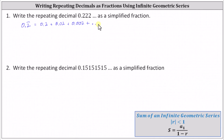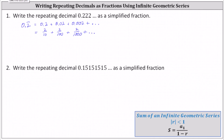Now let's write these decimals as fractions. We have two tenths plus two hundredths plus two thousandths and so on. Notice we have an infinite geometric series where A sub one, the first term, is equal to two tenths, which we can also simplify to one fifth.